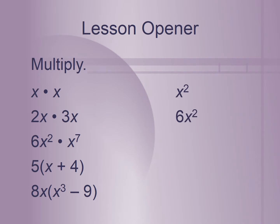For the next problem, we have 6x squared times x to the seventh. We're going to add our exponents to get x to the ninth, and we still have that 6, so we have 6x to the ninth.